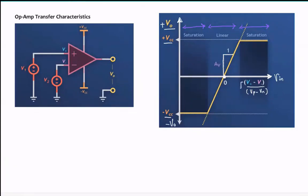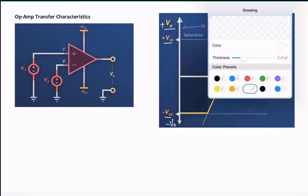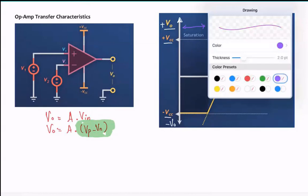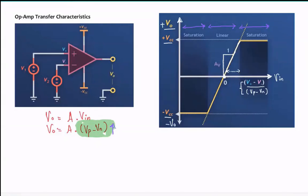If the input differential voltage increases — meaning the difference between V-plus and V-minus becomes a positive difference — we move in the positive direction on the graph and the output voltage also increases. The equation is: V-naught equals A times (V-plus minus V-minus). If this differential increases, V-naught goes up because it's a product — once it reaches VCC, it flattens out.